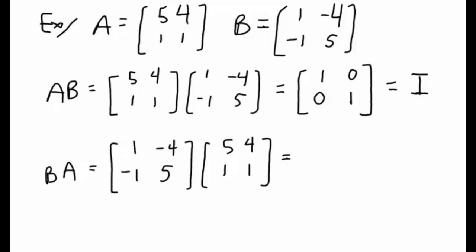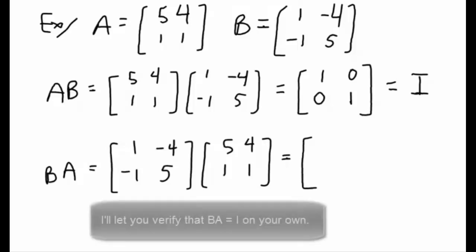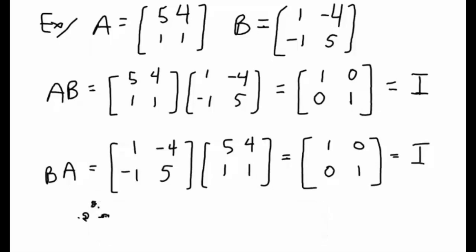So the multiplication A times B gives us a 2 by 2 identity matrix. If we go ahead and do the same procedure on B times A we will also get an identity matrix. So we're able to conclude that B is going to be the inverse of matrix A and we write B as A to the power of minus 1.